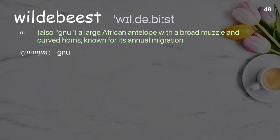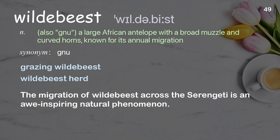Wildebeest (also gnu): a large African antelope with a broad muzzle and curved horns, known for its annual migration. Examples: grazing wildebeest, wildebeest herd. The migration of wildebeest across the Serengeti is an awe-inspiring natural phenomenon.